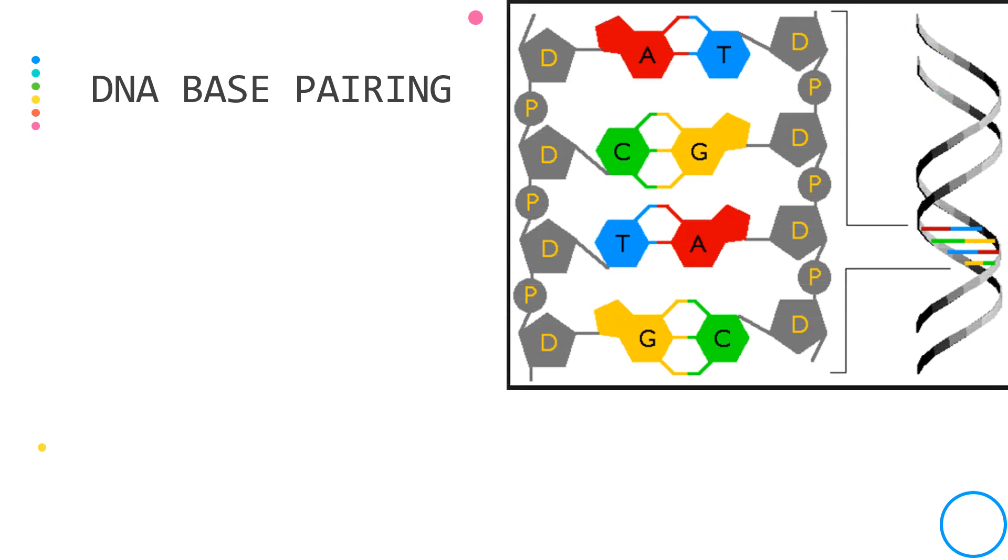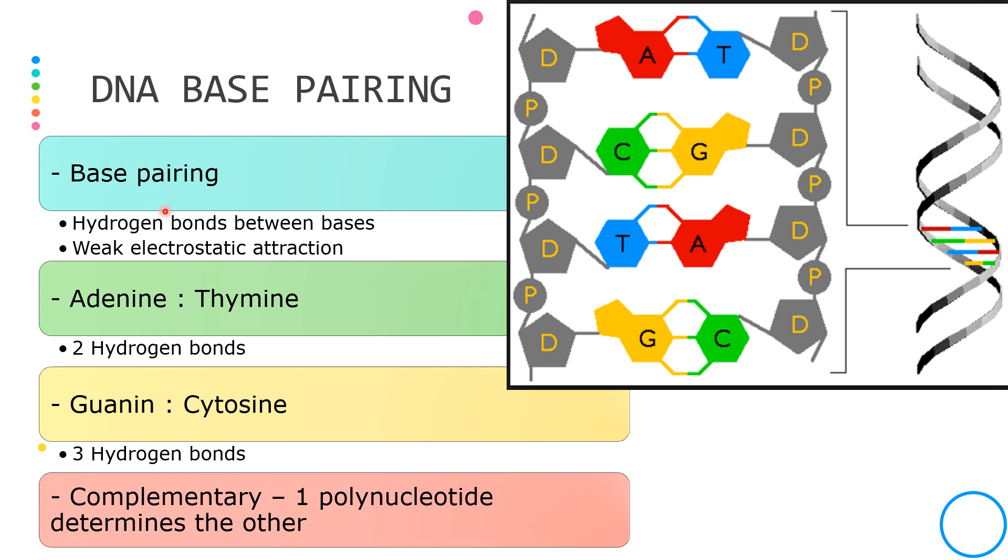Within the helix, an adenine is always adjacent to a thymine and similarly guanine is always adjacent to cytosine on the other strand. This is called base pairing.